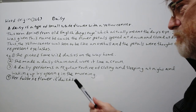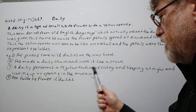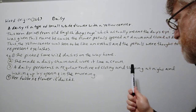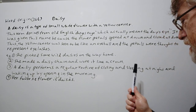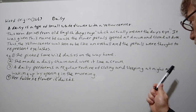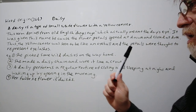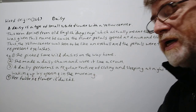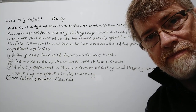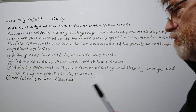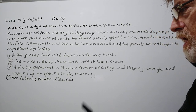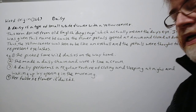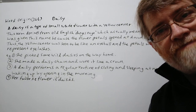Number three: a daisy performs a regular routine of closing and sleeping at night and waking up by opening in the morning. Number four: her favorite flower is daisies.